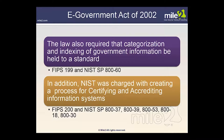The impact level drives the selection of controls and countermeasures required to protect that information. The core document for security categorization is FIPS 199, and the guidance document used to support that requirement is NIST Special Publication 800-60.